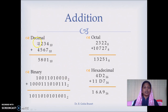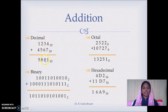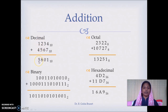Starting with the decimal number system, we add 7 plus 4 and get 11. We write 1 and carry forward 1, which is the tens digit. Then 1 plus 3 plus 6 is 10, so we write 0 and carry forward 1. Then 1 plus 2 plus 5 is 8, and 1 plus 4 is 5.